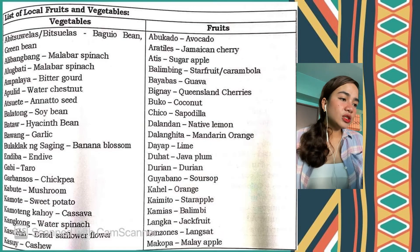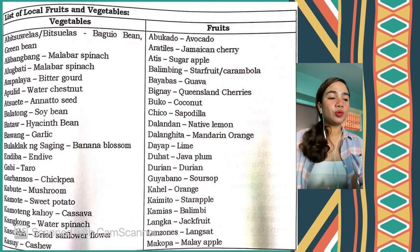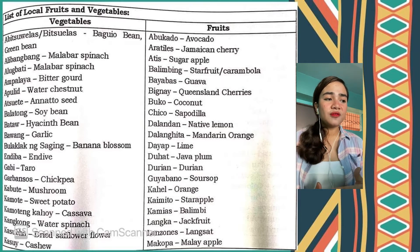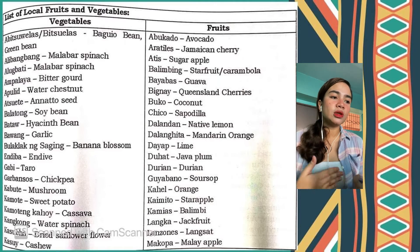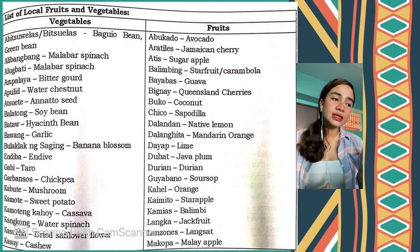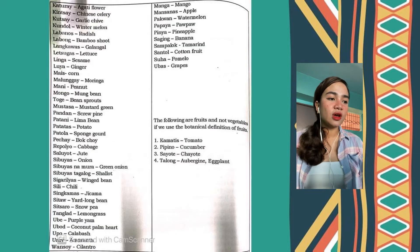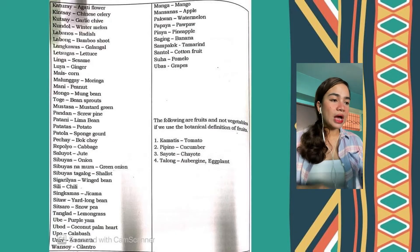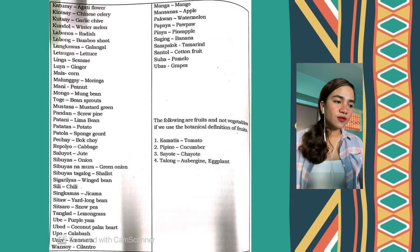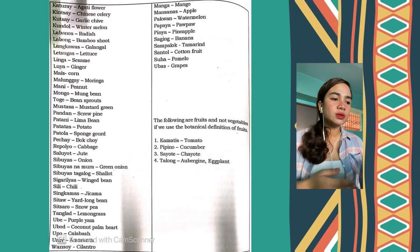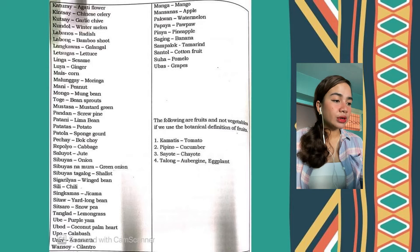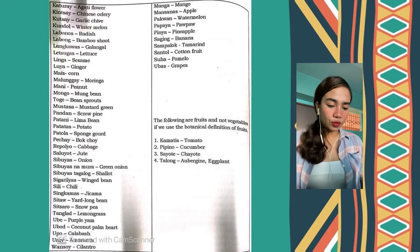As a student learning kitchen and basic food preparation, you must familiarize yourself with the most common fruits and vegetables available in the local market. We have used the botanical definition of fruit to classify. I would like to request that you become familiarized with this list of local fruits and vegetables.